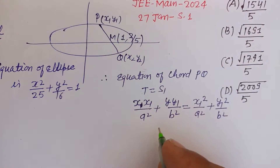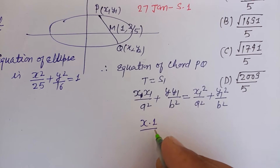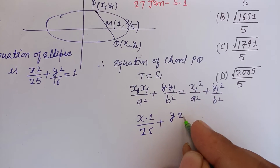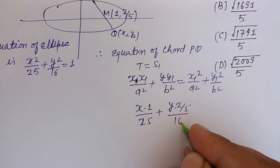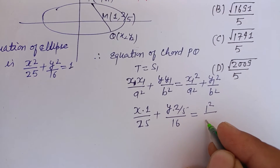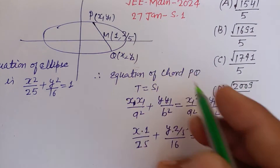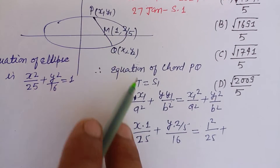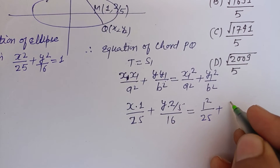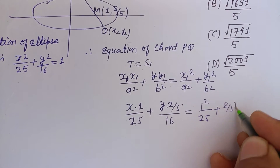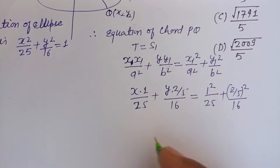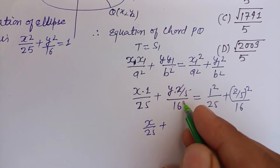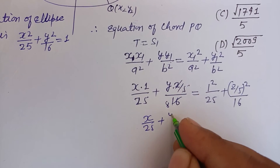Putting in the values: x·1/25 + y·(2/5)/16 = 1²/25 + (2/5)²/16. Here x₁ = 1 and y₁ = 2/5 are taken as the midpoint. Substituting y₁ = 2/5 and b² = 16, we get x/25 + 2y/(5×16).